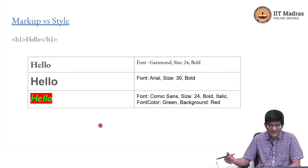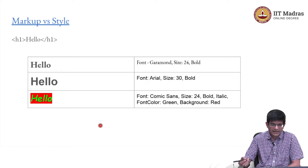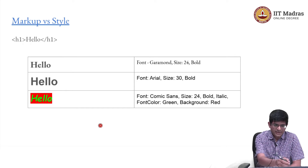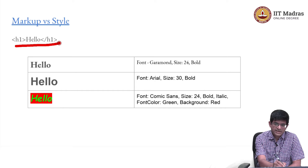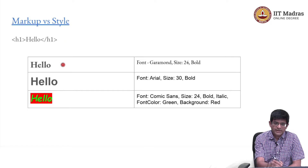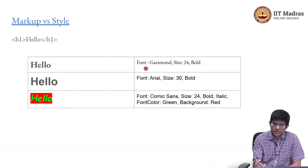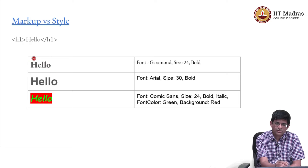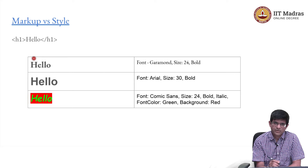To illustrate the distinction between markup and style, let us take an example. I have marked up this word 'hello' as an H1 title, a heading. It could get displayed in any number of ways. One possibility is font size 24, bold - this sort of matches what you might expect to see as an H1 heading.